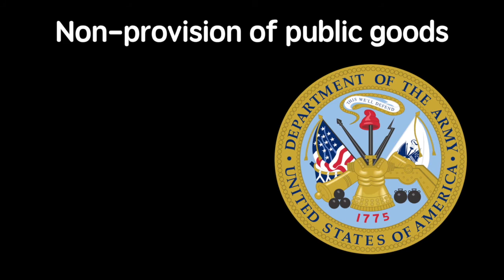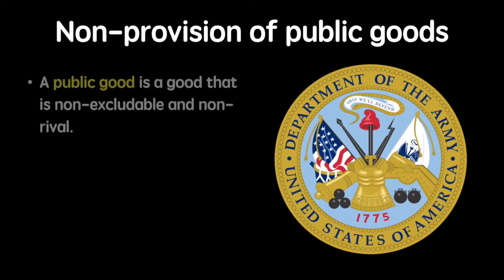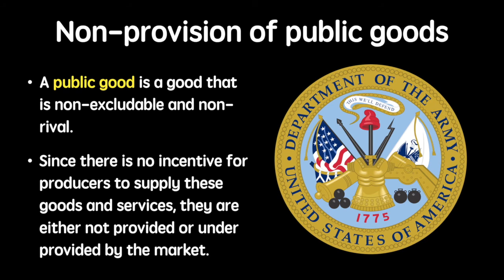Thirdly, a case can be made for missing markets, which may be a problem associated with public goods. A public good is a good that is non-excludable and non-rival. Non-excludable means that no one can be excluded from benefiting from it — for example, if someone doesn't pay tax, they can still receive a benefit from the country's national defense. Non-rival means the consumption of one person does not reduce the amount available for someone else. Since there is little to no incentive for producers to supply these goods, they are either not provided or under-provided by the market. Producers also face the free rider problem, in which those who do not pay for a good are still able to enjoy it, leaving little that could be done to encourage consumers to pay. Once again, this builds a case for government provision of such goods.